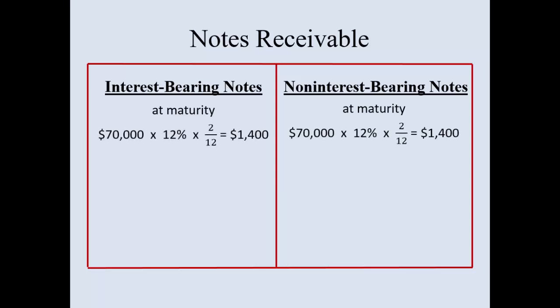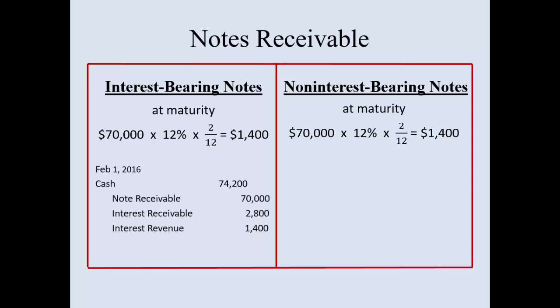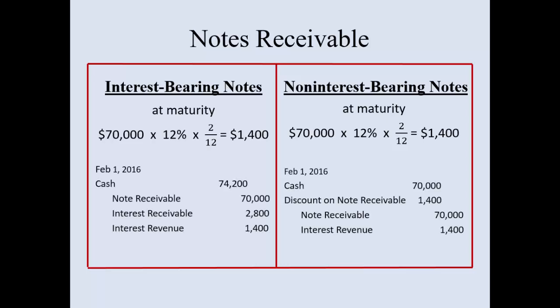At maturity, the same calculation applies — it's just the account names that are going to be different. Interest revenue was the same with this example.